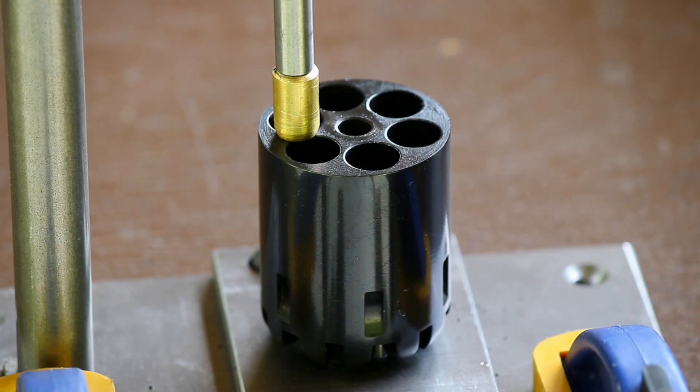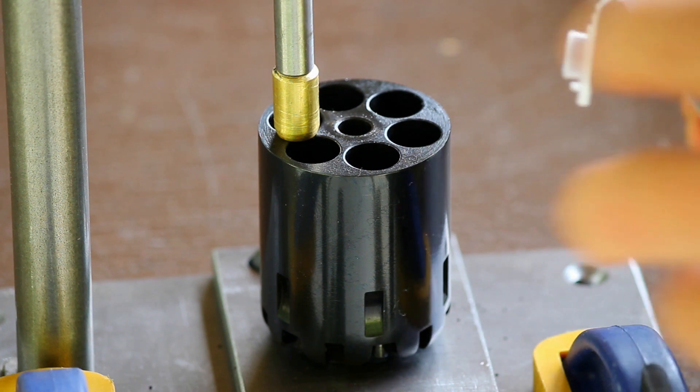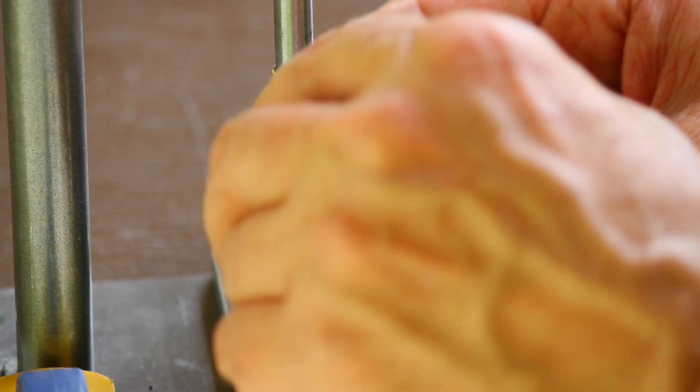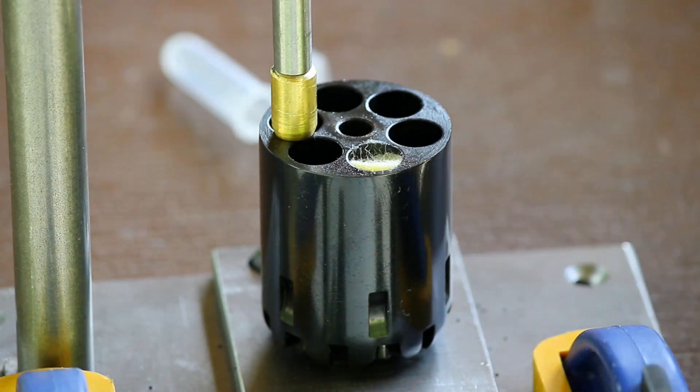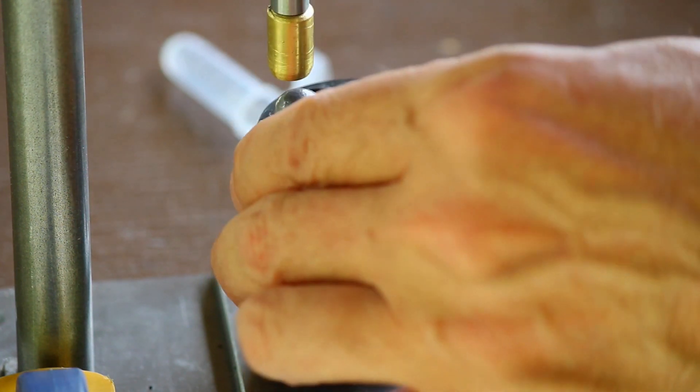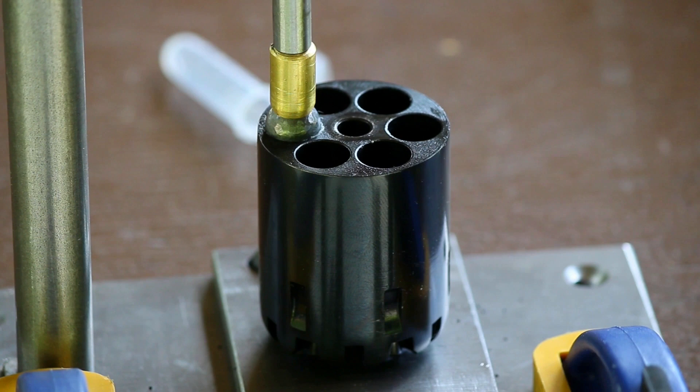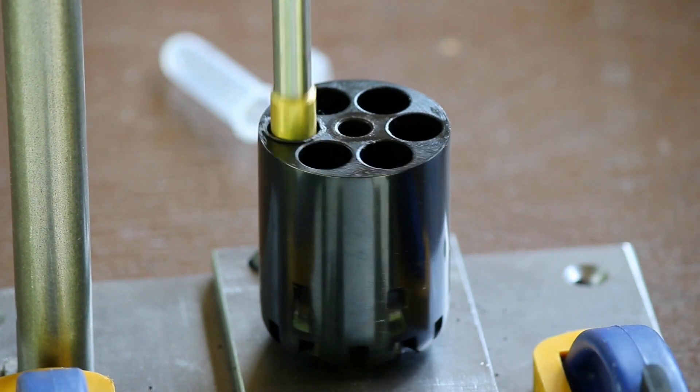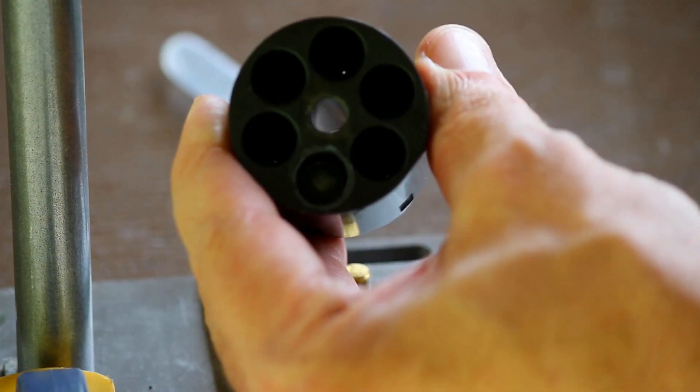So to load this, just like any other percussion revolver, I'm using 25 grains of Goex 3F powder. I've already pre-measured into these little plastic dispensers. So I'm going to pour the powder in, top it with a wad and use a Hornady 454 round ball. So put it on there, squish it all down, and there we go. There's one loaded chamber.